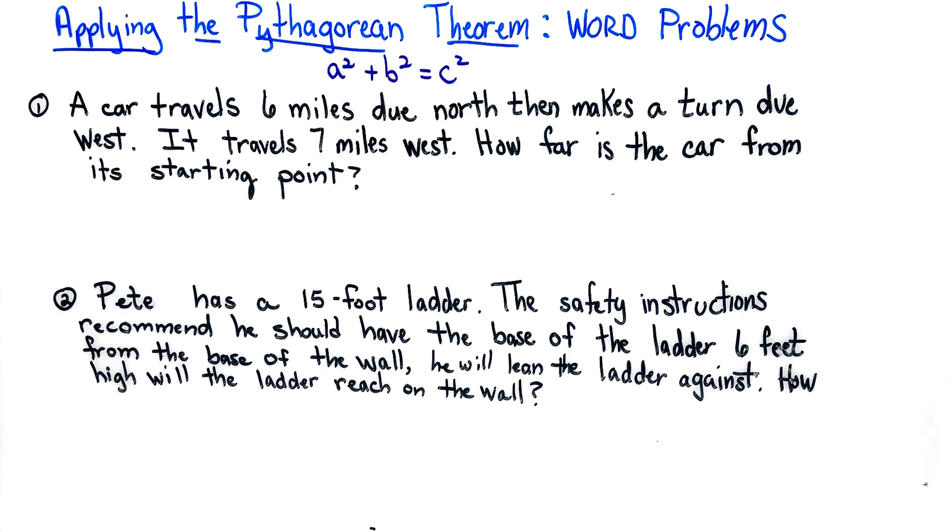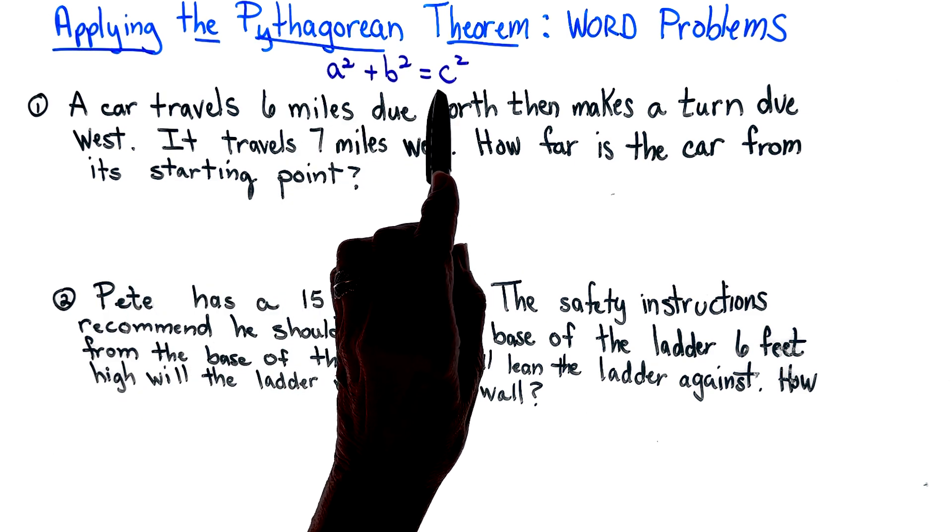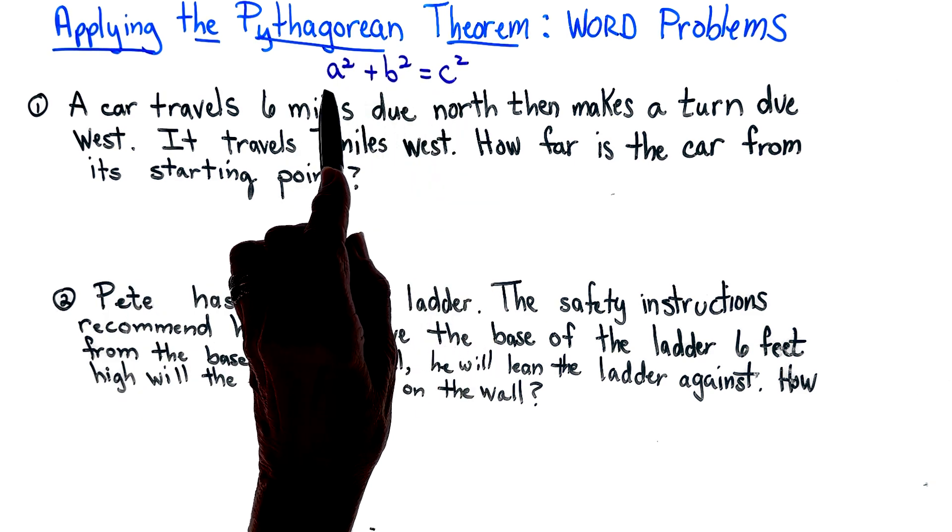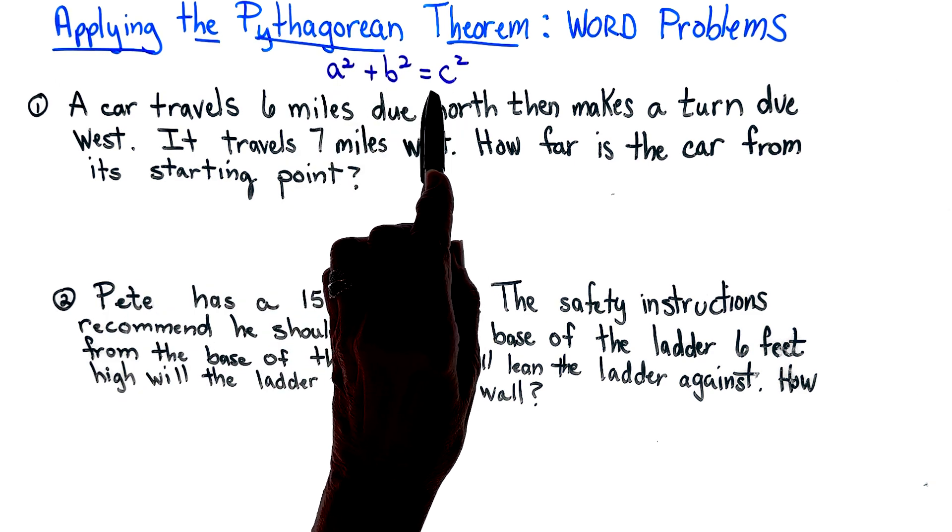For this lesson we will be applying the Pythagorean theorem, and yes they are word problems. We're going to read the text, mark it, and for the Pythagorean theorem we're actually going to draw a picture and then solve the problem. The formula that we must know is a squared plus b squared equals c squared.